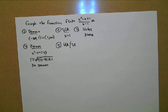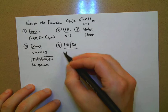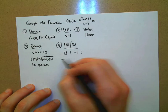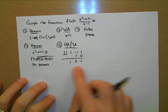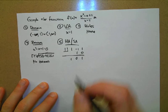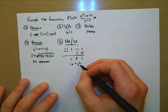Going through synthetic division: drop the 1 down, 1 times 1 is 1, negative 1 plus 1 is 0, 0 times 1 is 0, plus 1 is 1. Elizabeth, interpret the answer: x + 1 over (x - 1) — with remainder 1. We throw out the remainder, so the slant asymptote equation is y = x. That's nice and easy to graph.